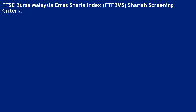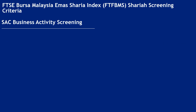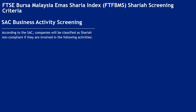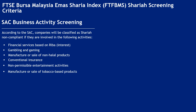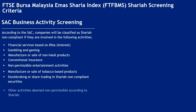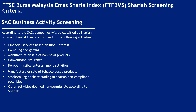FTSE Bursa Malaysia EMAS Shariah Index — SAC Business Activity Screening. According to the SAC, companies will be classified as Shariah non-compliant if involved in: financial services based on riba or interest, gambling and gaming, manufacture or sale of non-halal products, conventional insurance, non-permissible entertainment activities, manufacture or sale of tobacco-based products, stockbroking or share trading in Shariah non-compliant securities, and other activities deemed non-permissible according to Shariah.